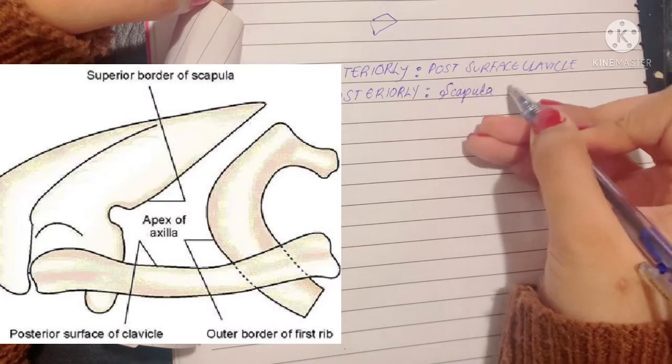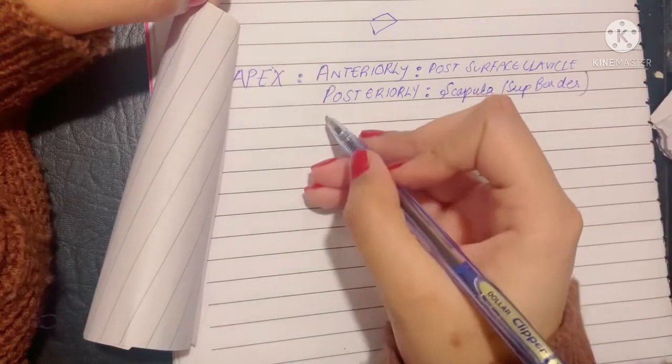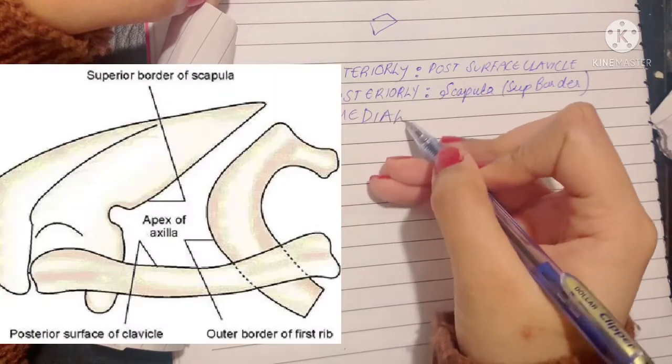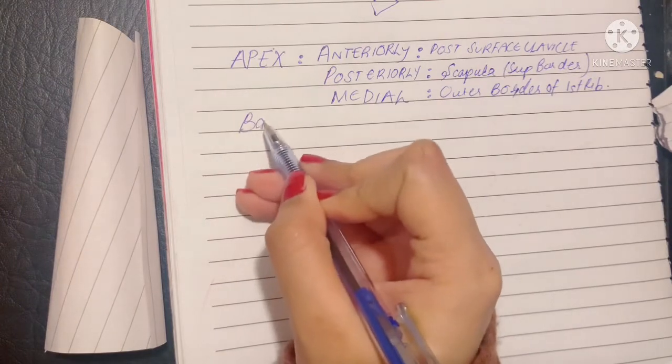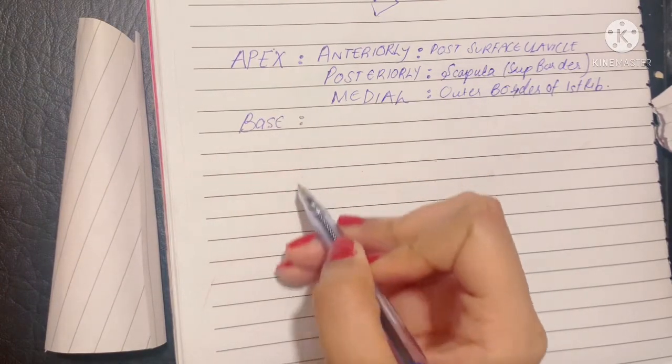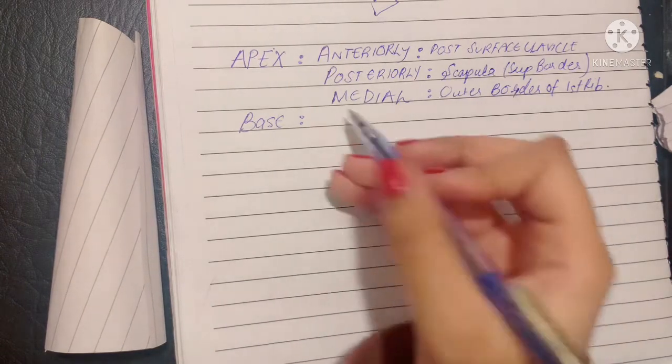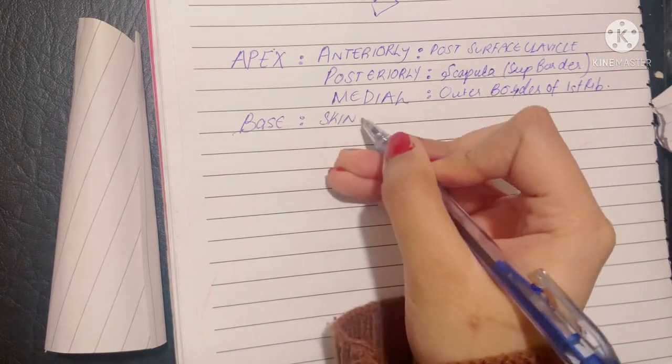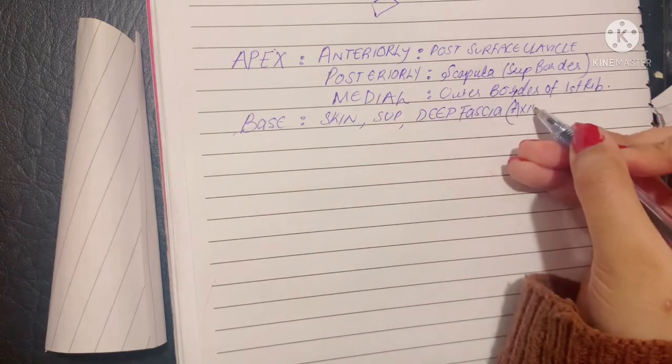Moving on, let's talk about the base. The base boundaries are pretty simple. The base is basically the skin that you can see under your armpit. So the base is made up of skin, superficial fascia, and deep fascia known as the axillary fascia in the axilla.